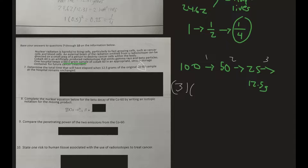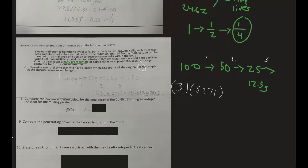What is the actual half-life time for cobalt-60? From the reference table, it's 5.271 years. Three half-lives times 5.271 gives the total time elapsed — approximately 15.8 years.